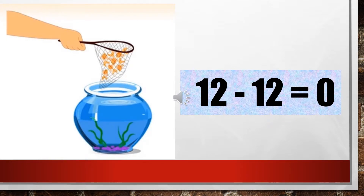One more picture example: in this fish pond there were 12 fishes. But I have taken out all 12 fishes out of this fish pond. So if I have taken all 12 fishes out, how many will be remaining in the pond? There will be 0 fishes left, because not even one fish remains — I have taken them all out. So when I subtract 12 from 12, the answer will come to 0, because nothing is left there.